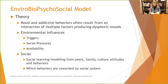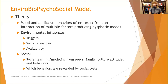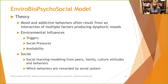Social learning and modeling from peers, family, culture, attitudes, and behavior can also contribute. If a person grows up where parents are clinically depressed or there's a lot of hostility and anger, it affects their emotional state. Which behaviors are rewarded by the social system? Are you rewarded for being happy and motivated, or not? Are you rewarded when you drink because you feel more social afterward? We want to look at that.